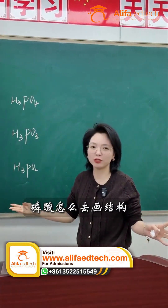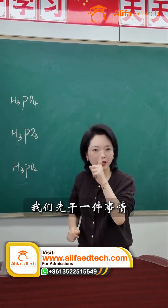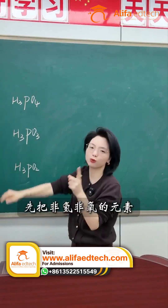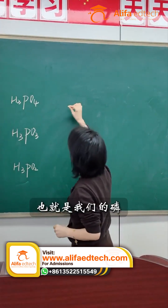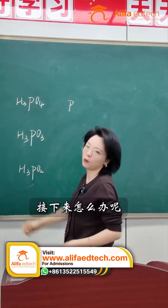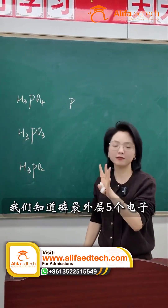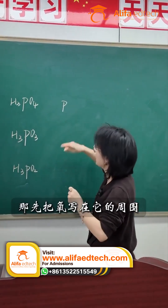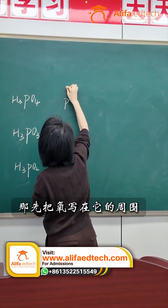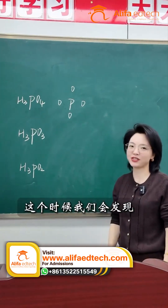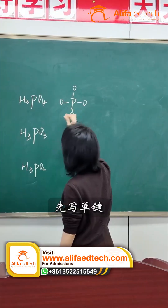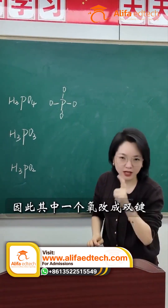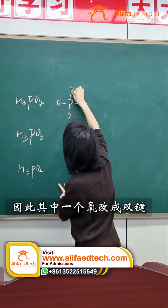Next, let's take a look at how to draw the structure of phosphoric acid. For any oxyacid, the first thing we do is put the element that isn't hydrogen or oxygen in the center — in this case, that's our phosphorus. We know phosphorus has five valence electrons, so it should form five bonds. Let's start by placing the oxygen atoms around it. We'll see we have four oxygen atoms. If we draw single bonds, that's only four bonds, which doesn't satisfy the five-bond rule. So we change one of the oxygens to a double bond.